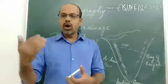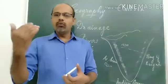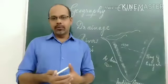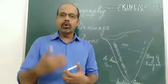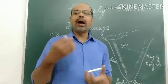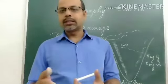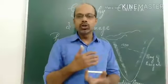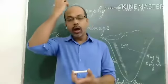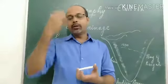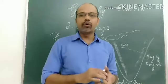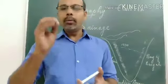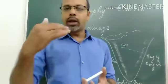The last three tributaries — Wainganga, Manjira, and Penganga — are very large rivers themselves, not like small tributaries. They all join together with the river Godavari and flow into the Bay of Bengal.